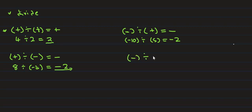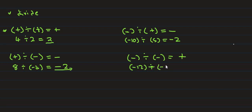When we divide a negative by a negative, the result is positive. For example, negative 12 divided by negative 3: negative divided by negative gives positive, and 12 divided by 3 equals 4, so the answer is positive 4.